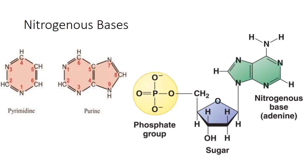Pyrimidines include cytosine, thymine, and uracil. The major difference between DNA and RNA is the presence of thymine in DNA versus uracil in RNA. Purines have a double ring structure, while pyrimidines have a single ring structure. These are the key structural components of a nucleotide.